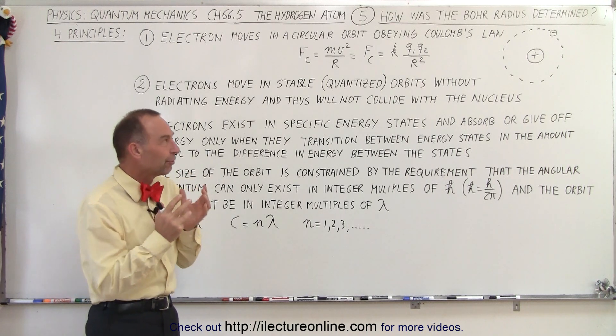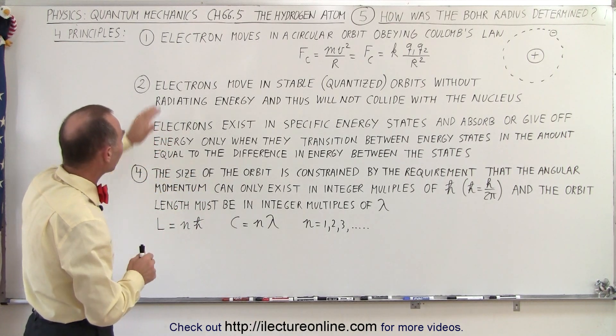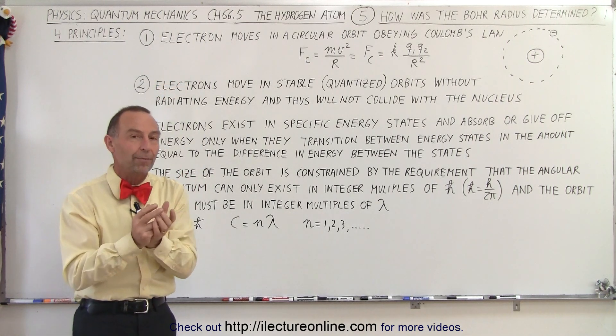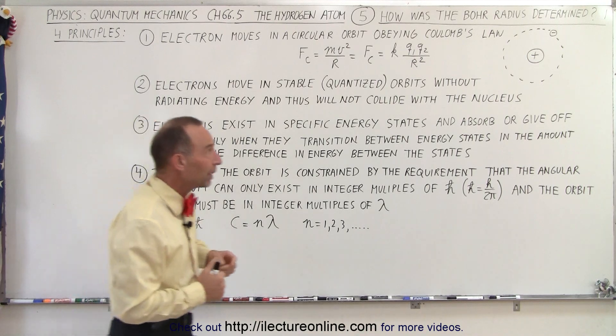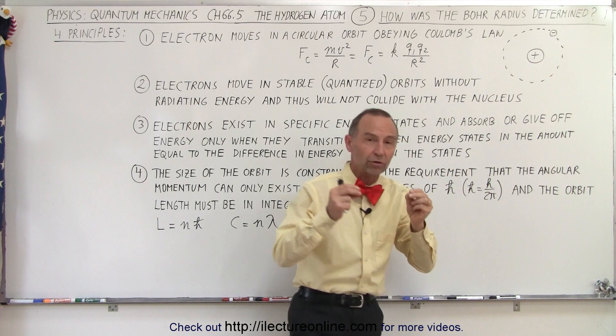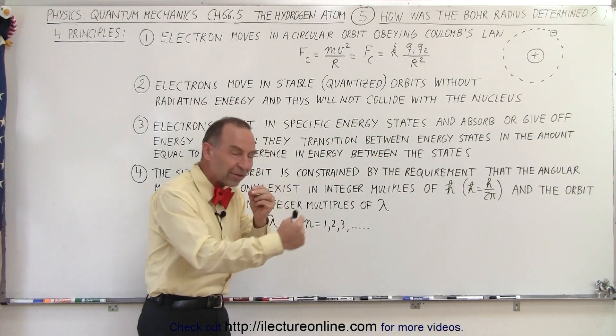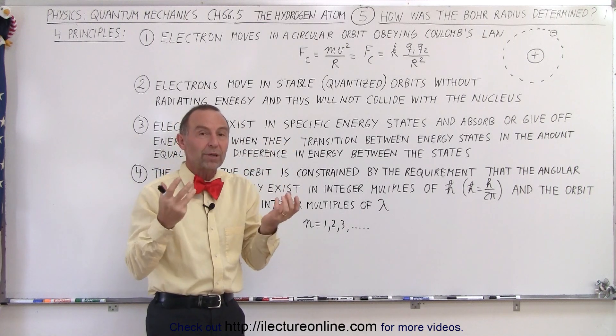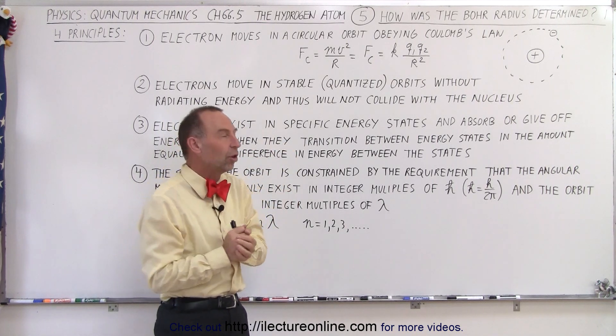The principles were the following four. First of all, they said that electrons must move in circular orbits obeying Coulomb's law. That was, of course, an absolute must because the electron is negatively charged and the proton is positively charged, so what provides the centripetal force of the orbit must be the attractive forces between them, which is defined by Coulomb's law.